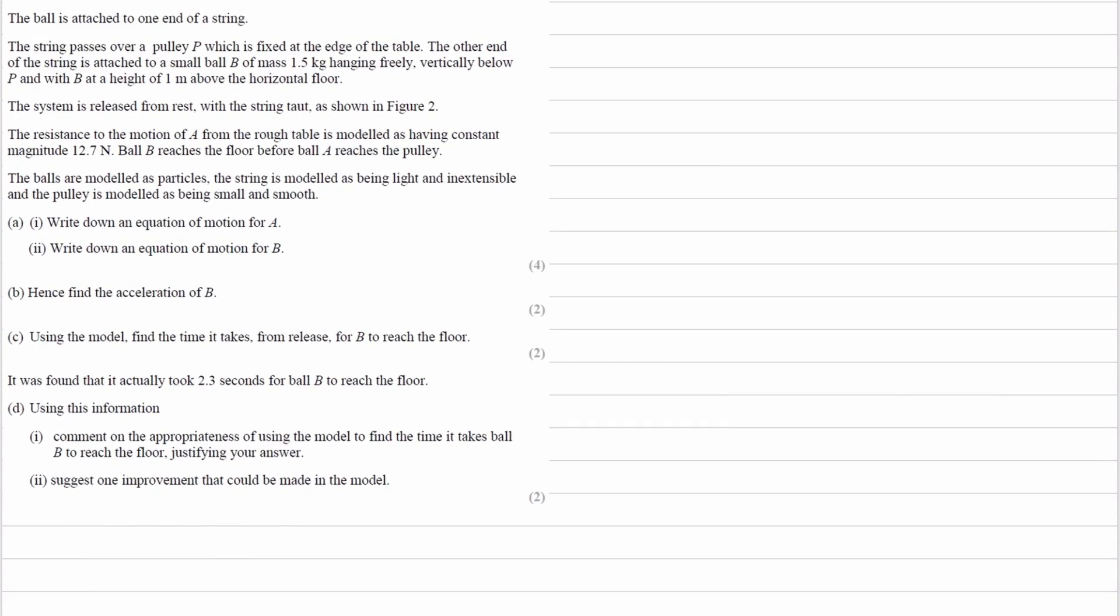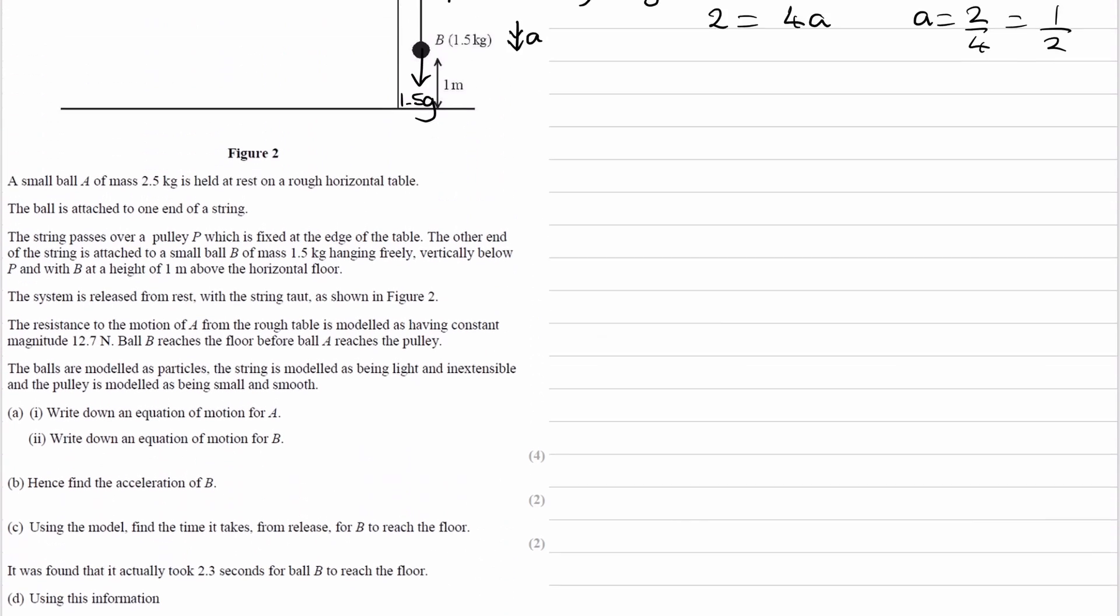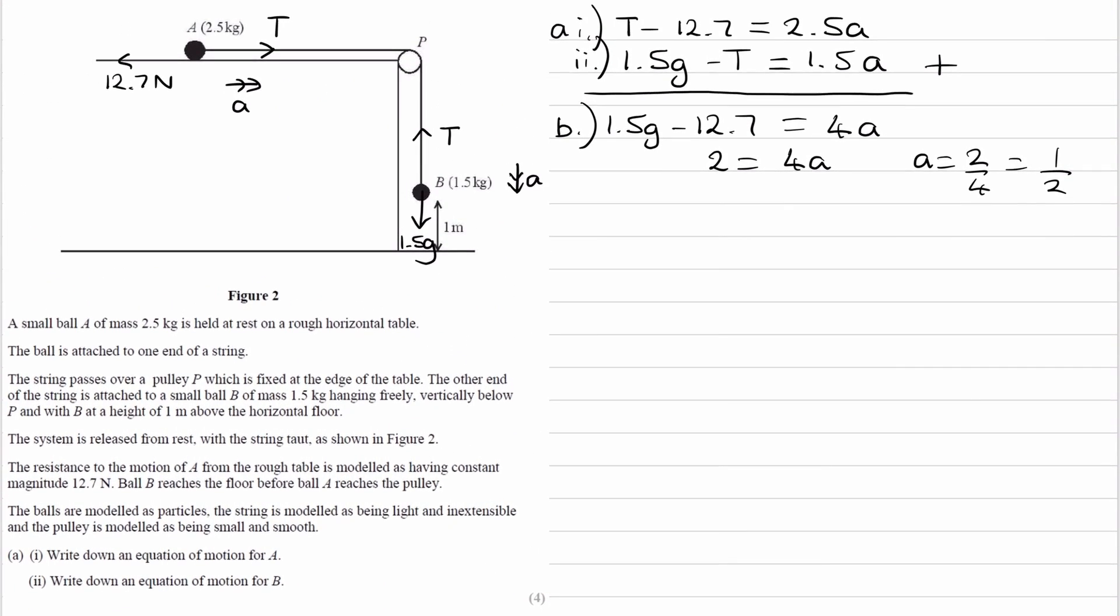So for part C, it says using the model, find the time it takes from release for B to reach the floor. So this is going to be a SUVAT question. We are after time. Time taken to reach the floor. We know the distance travelled is 1 metre. We've worked out the acceleration from the previous part, 0.5 metres per second squared. And it says in the question that the system is released from rest. So that would mean that the initial speed of B would be zero. And the SUVAT equation that relates those four things together is S equals UT plus half AT squared.